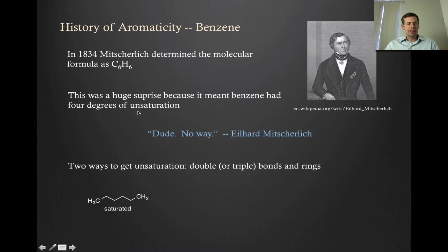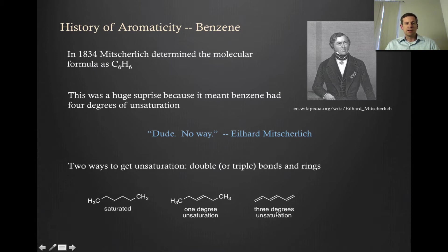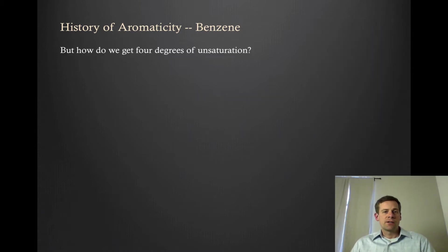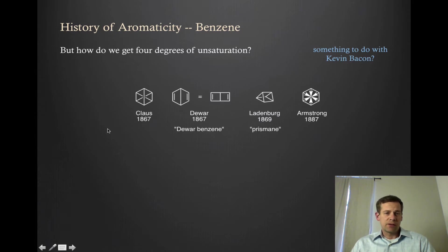If we look at hexane, this is a fully saturated molecule because each carbon is attached to the maximum number of hydrogens. If we put in an alkene, we have one degree of unsaturation. If we put in three alkenes, we have three degrees. Another way to get a degree of unsaturation would be to take hexane and form it into cyclohexane — that would also be one degree. So the question is, how do we get to four degrees of unsaturation? There are a lot of possibilities, and so chemists really struggled with this.